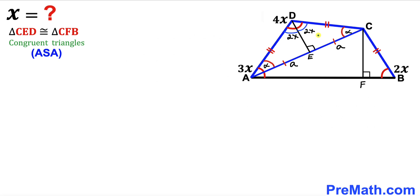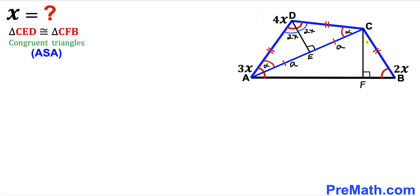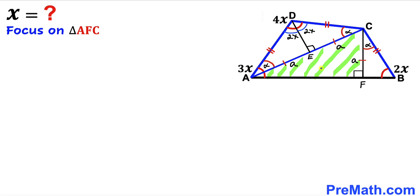We observe that right triangle CED and right triangle CFB are congruent by the angle-side-angle congruency theorem: the angles are congruent, and the 90-degree angles match. Therefore angle CFB equals angle alpha, and side CF equals side CE, which is lowercase a.